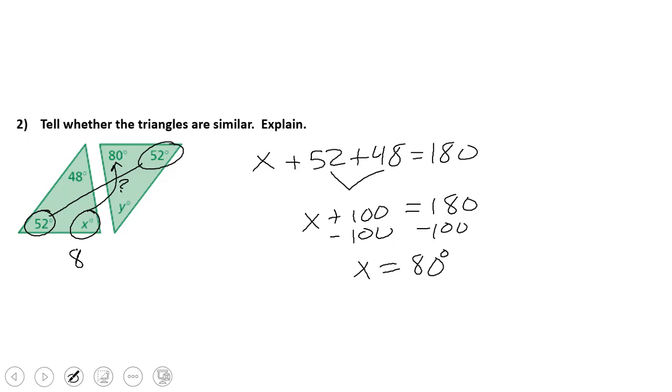So if I put 80 degrees here, is 80 degrees equal to 80 degrees? Absolutely. So since X is 80 degrees, we have two angles that are congruent. Therefore, Y must be 48 degrees. Therefore, yes, we have similar triangles.